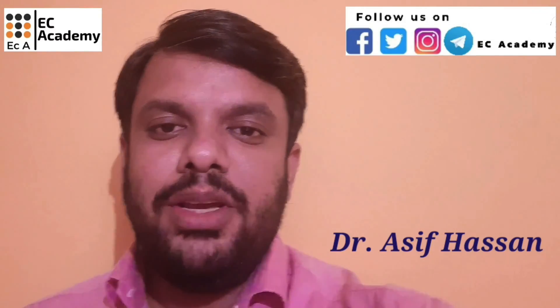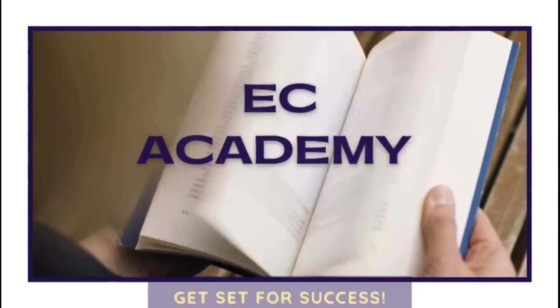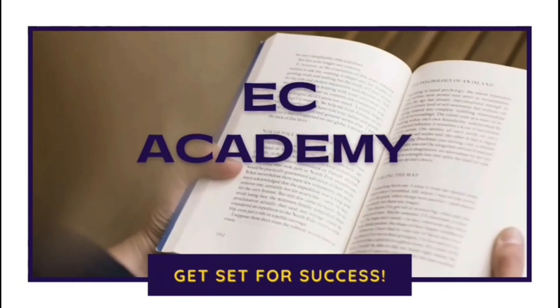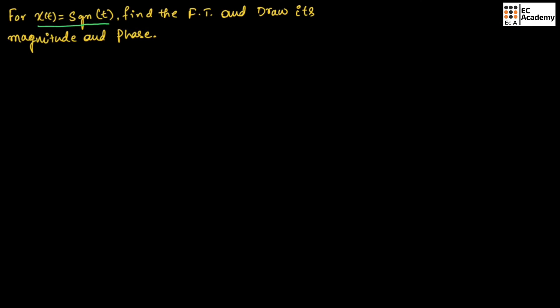Hello friends, welcome to ESA Academy. In this lecture, let us understand a problem on continuous time Fourier transform. For the signal x(t), which is the signum function, we need to find the Fourier transform and draw its magnitude and phase.